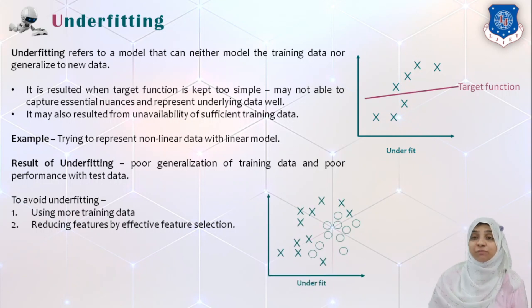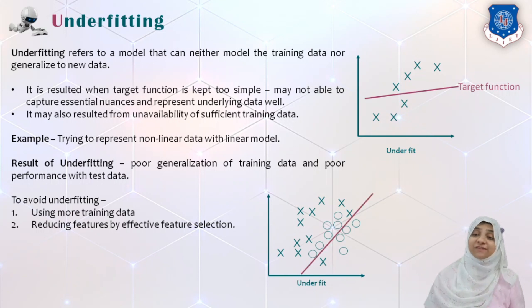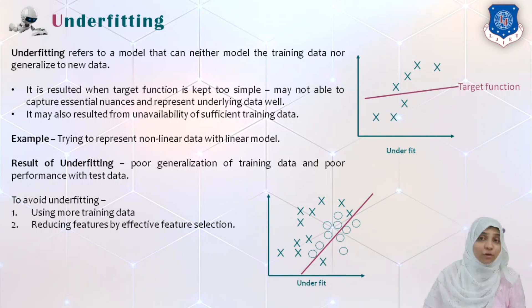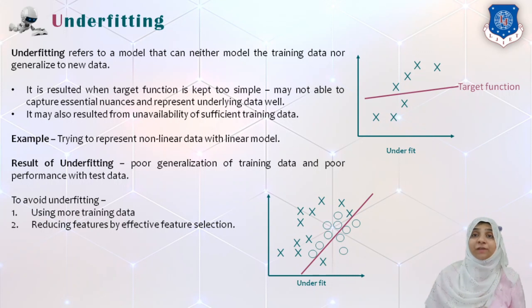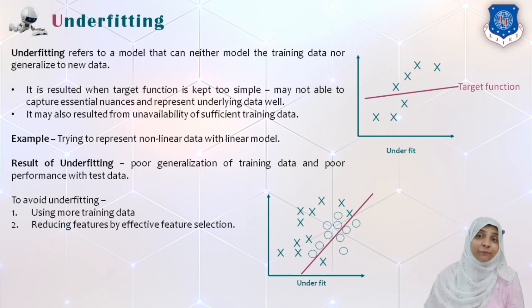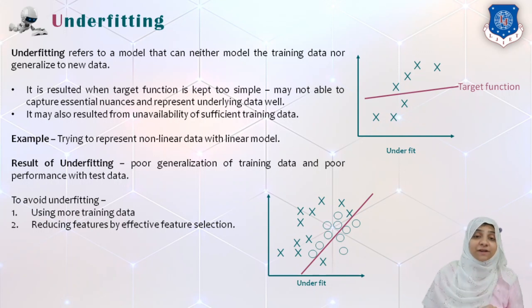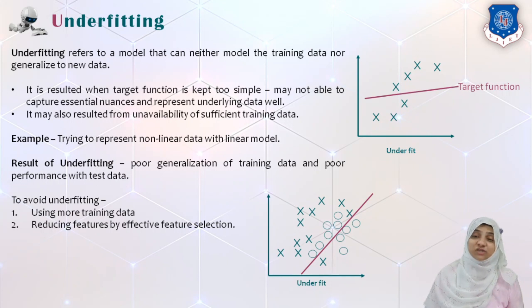An example of underfitting for a classification problem: if I want to categorize two different types of data — circles and crosses — I draw a line that gives a very poor separation of the two groups. Trying to represent non-linear data with a linear model is an example of underfitting. The result is poor generalization of training data and poor performance with test data.